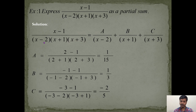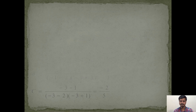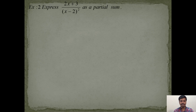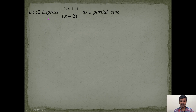Now let's take Example 2, which is on type 2: repeated linear. Express (2x + 3) / (x − 2)² as a partial sum.